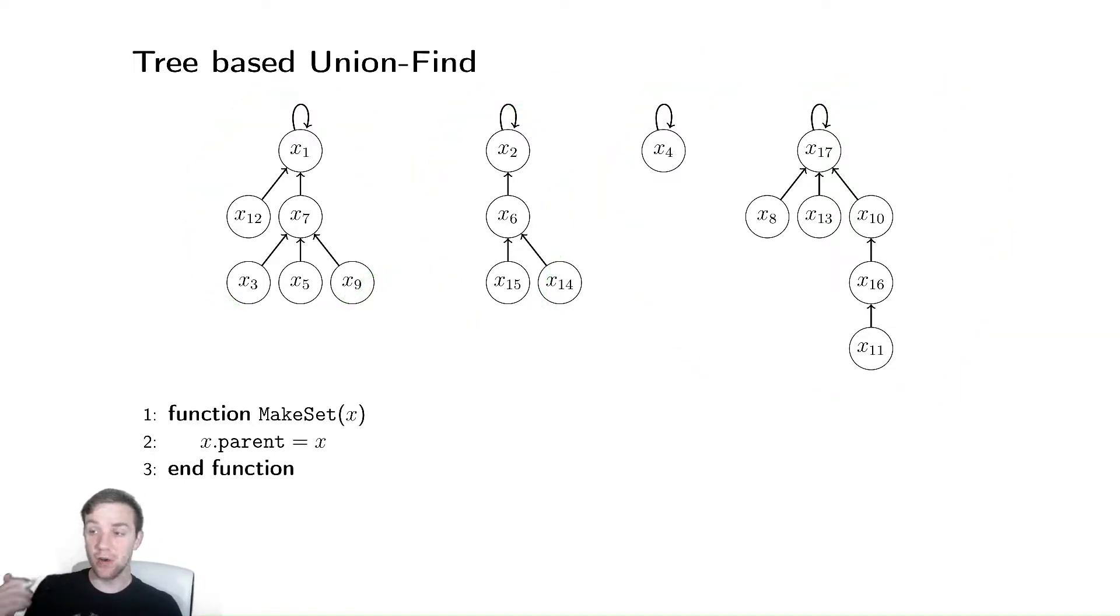And just like we saw with our linked list-based UnionFind, our representative is going to be one node within the different sets. For each of them, that thing is going to be the root of the tree. So it's going to be x1, x2, x4, and x17 for these various trees that I have here.